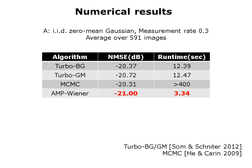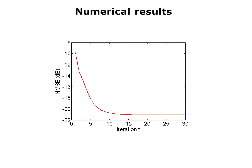Some numerical results. We took matrices that are IID zero-mean Gaussian. Our measurement rate was 0.3, and we averaged over 591 images. We consider four different algorithms, showing normalized mean square error — the lower the better — and runtime in seconds, also lower the better. Turbo BG and Turbo GM are works by Phil Schneider's group at Ohio State and use a Bayesian-like approach. An MCMC approach by He and Karen is also quite good, but very slow. In contrast, our AMP Wiener algorithm is somewhat better than the other algorithms in terms of reconstruction, and additionally four times faster. Furthermore, as the iterations proceed on the horizontal axis, the normalized mean square error on the vertical axis goes down, and even 15 iterations would be a fine result.